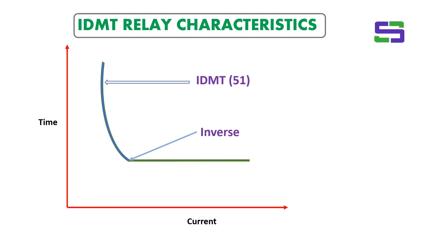For the IDMT 51 relay, up to the inverse point where the arrow is marked, this relay will behave with the inverse characteristic. It maintains an inverse relationship between time and current on the TCC curve. This inverse region may cover 20%, 30%, or 50% of the relay's range, depending on the relay manufacturer.